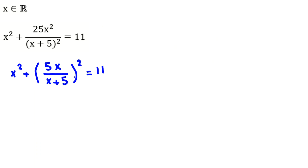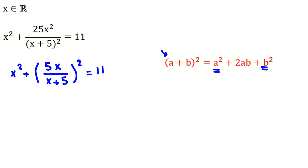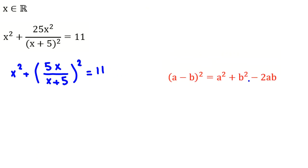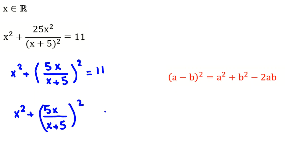Now we have something squared plus something squared equal to 11. I want to change it using the famous algebraic identity: a squared minus 2ab plus b squared equals (a minus b) squared. There are around 50 important formulas and identities you should memorize in each topic — combinatorics, geometry, algebra, number theory. So here I apply the identity using minus: x squared plus (5x over (x plus 5)) squared minus 2 times x times (5x over (x plus 5)).